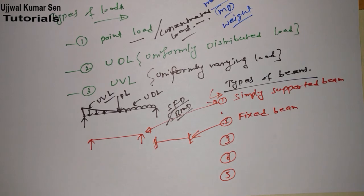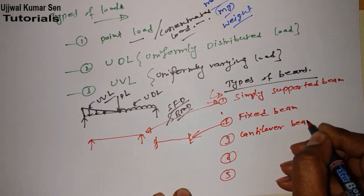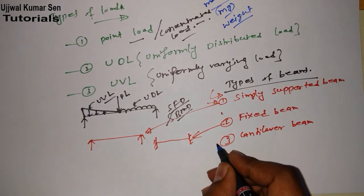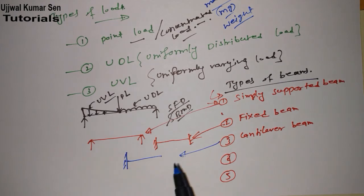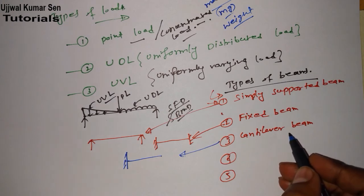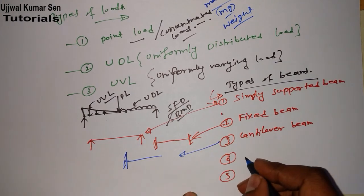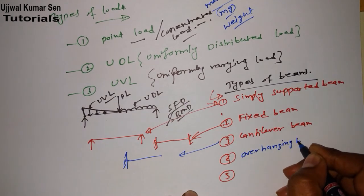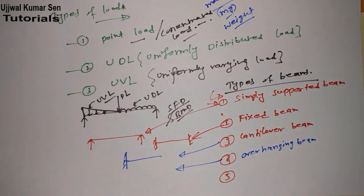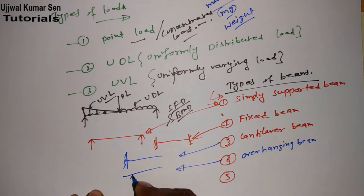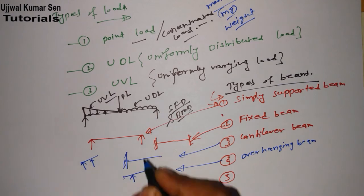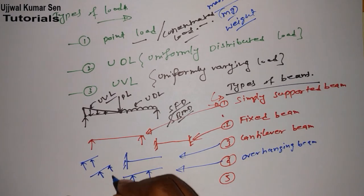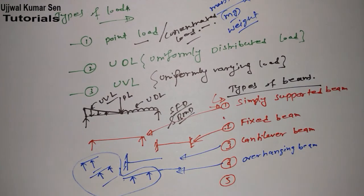Next is cantilever beam. Suppose there is a beam where one side is fixed and the other side is free — that type of beam is known as a cantilever beam. Another type is overhanging beam. Suppose there are two supports and some part of the beam is hanging beyond the supports on one side or both sides — that is also known as an overhanging beam. All those examples are for overhanging beam.